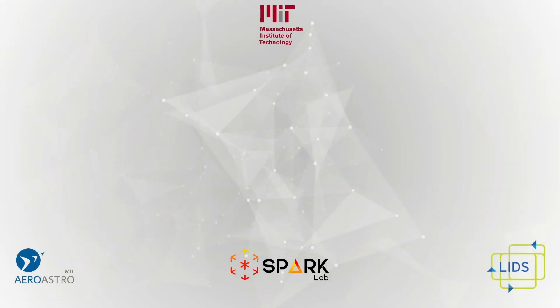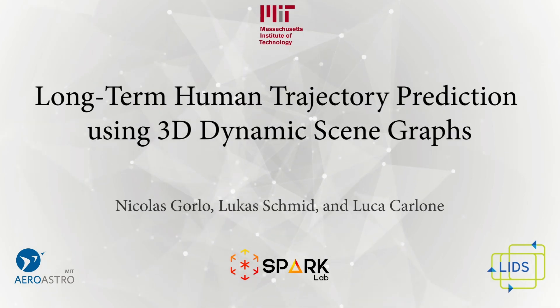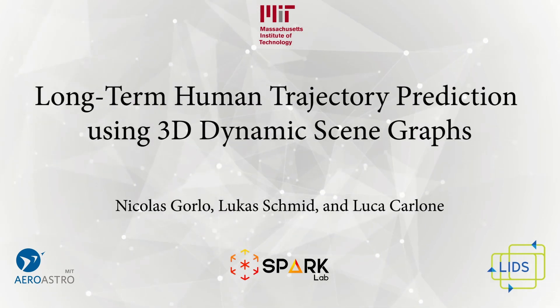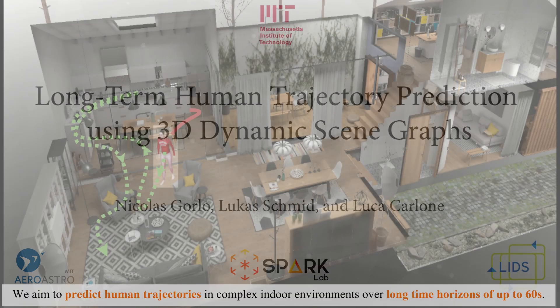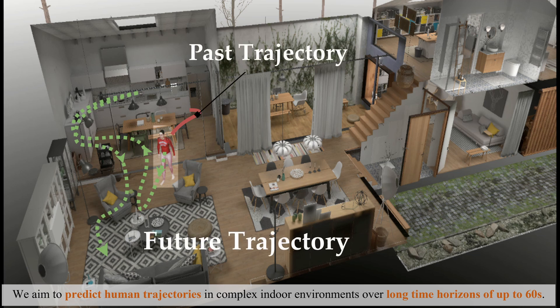We present our paper on long-term human trajectory prediction using 3D dynamic scene graphs. We aim to predict human trajectories in complex indoor environments over long time horizons of up to 60 seconds.